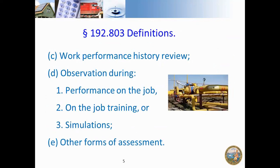Work performance history review — when someone gives their qualifications, you can review what they did before and look at their previous activity on pipeline safety. You can also observe during performance of the job: have them do some activities on the pipeline, such as patrolling, leak survey, or checking conditions. Additionally, on-the-job training, simulations, or any other forms of assessment may be used.